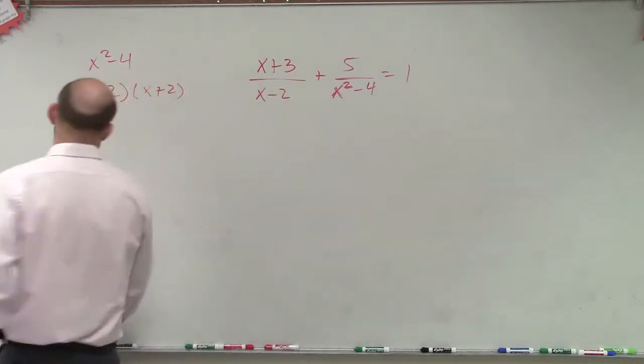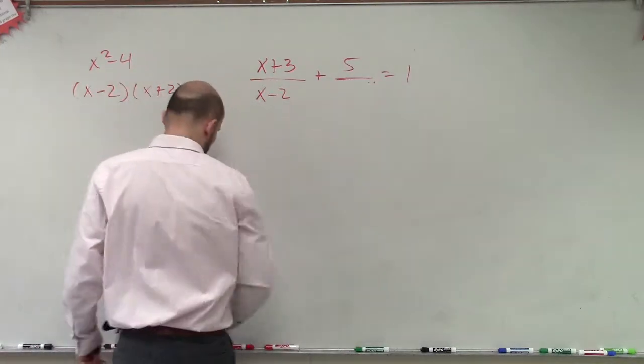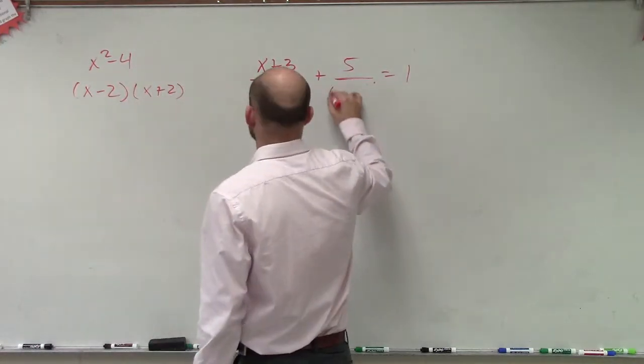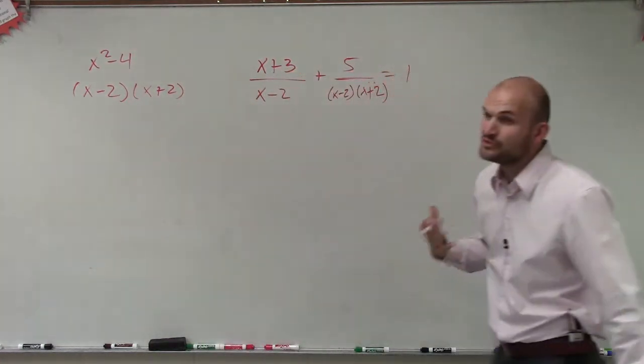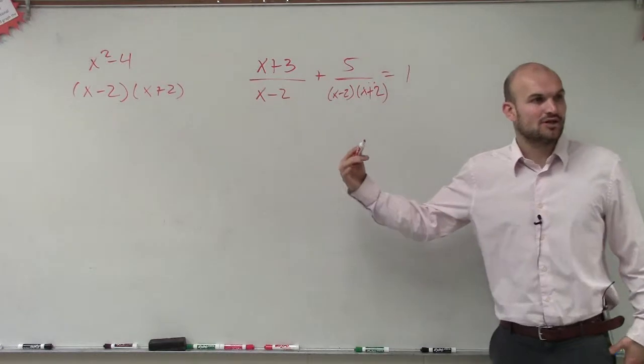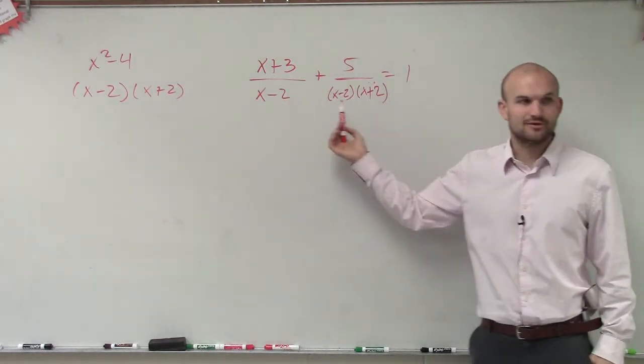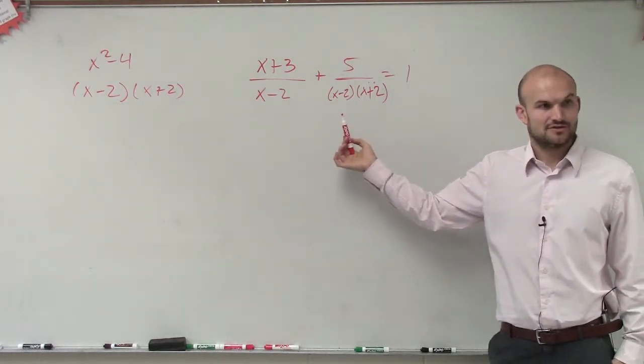So what I'm going to do is I'm just going to rewrite x squared minus 4 as its factored form. And the reason why I'm going to do that is now you can see that my least common multiple, they already share an x minus 2. They share that.